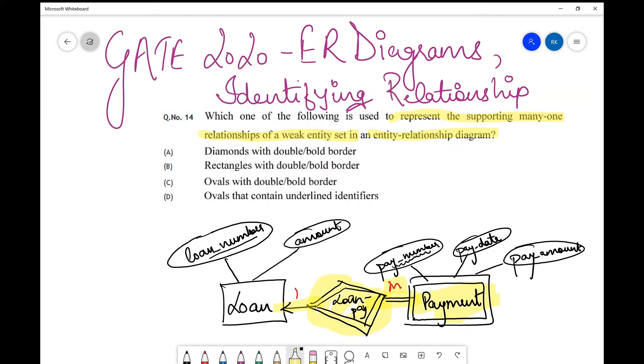If we talk about this identifying relationship, what will this comprise of? We had discussed that it will always comprise of the primary key of the strong entity set, which is over here, this loan number. And the discriminator, which is present in the weak entity set.